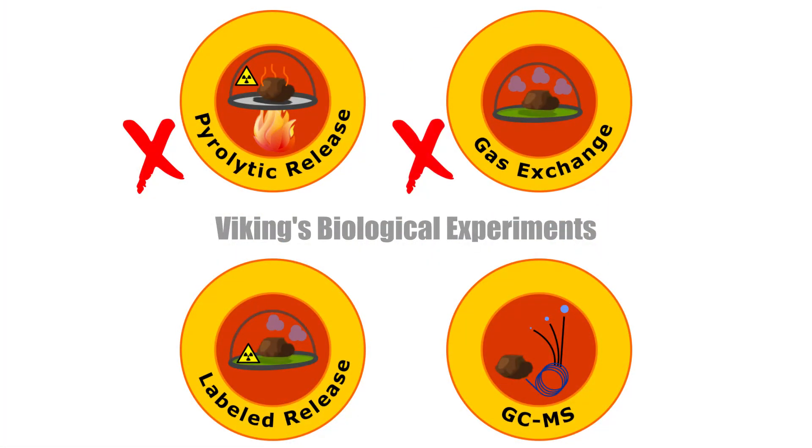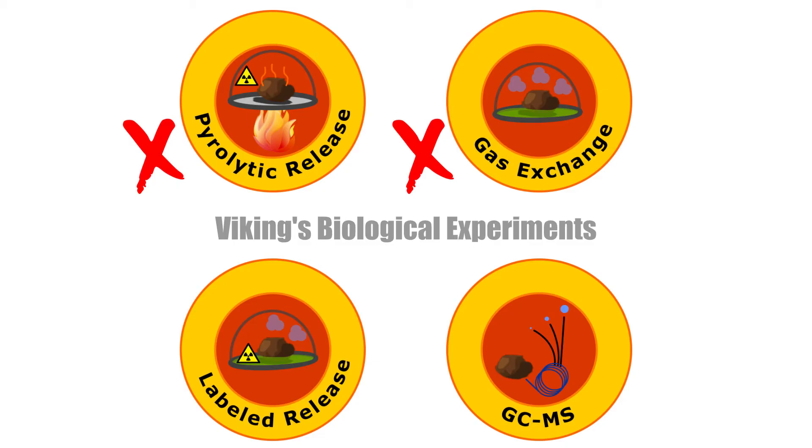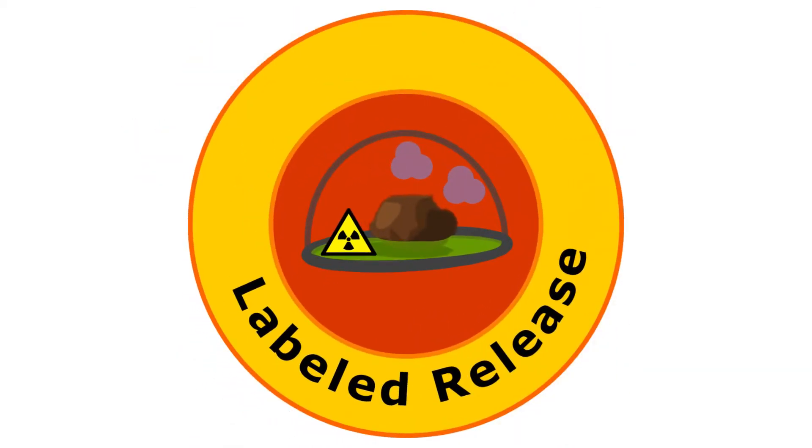The next experiment is the one that's still inconclusive to some scientists. This is the labeled release experiment. This experiment is designed to test metabolic activities in the soil sample, moistened with a dilute solution of very simple organic compounds. If organisms exist in the soil, they might release CO2 into the atmosphere from breaking down the organic compounds provided in the solution.